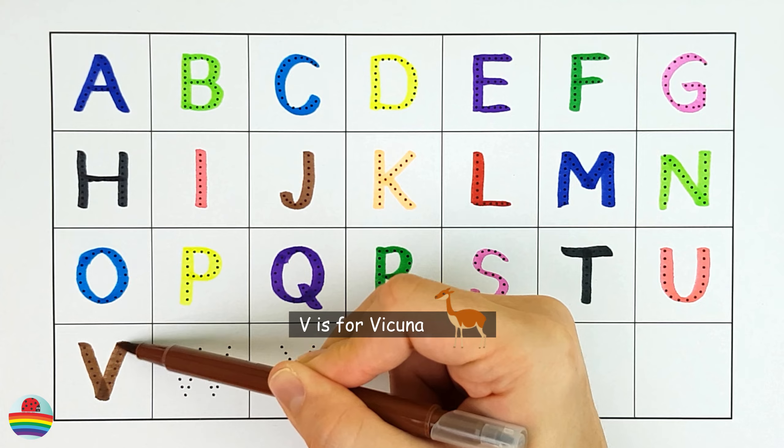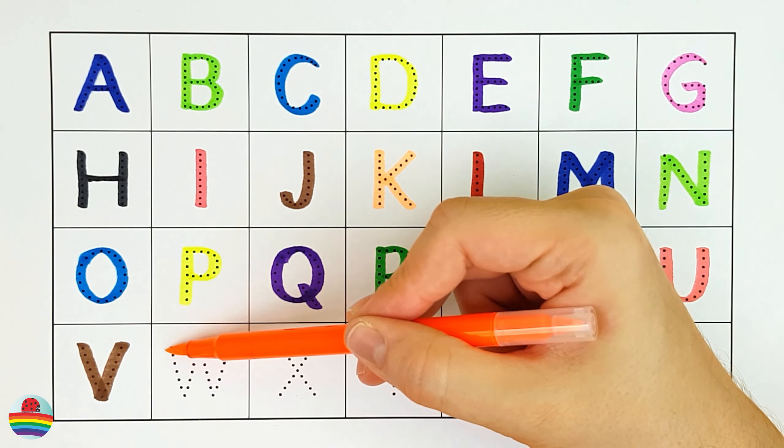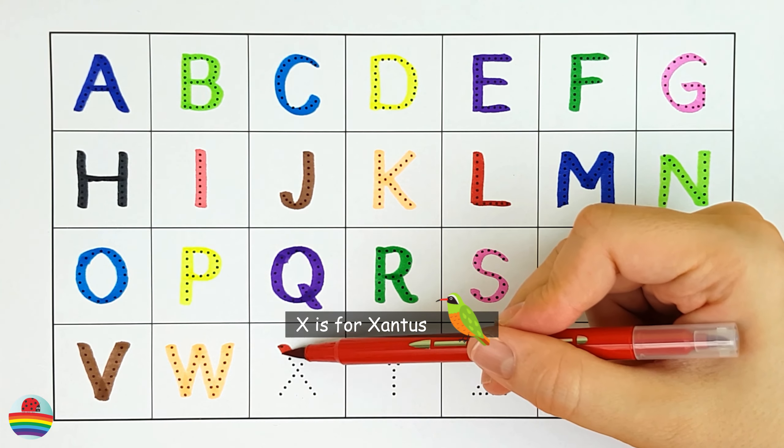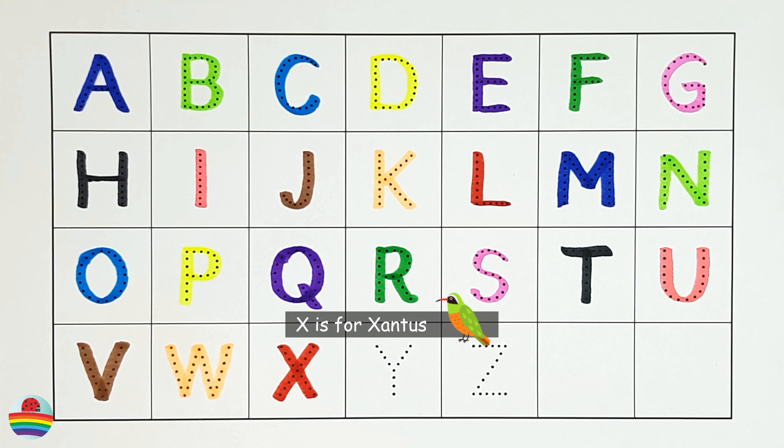V. V is for Vicuna. V. W. W is for Whale. W. X. X is for Zantus. X.